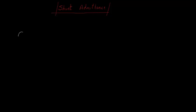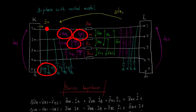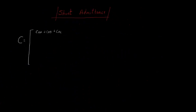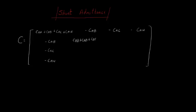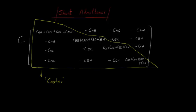For the shunt admittance matrix, we can build the matrix using the inspection method, where the elements on the main diagonal are the sum of the capacitances connected to the respective node. As an example, the first element of the matrix is the sum of CAA plus CAB plus CAC plus CAN. Keep in mind that OpenDSS divides the value of the capacitances by two due to the PI model in its internal algorithm. The elements off the main diagonal are the mutual capacitances between the respective nodes, with a negative sign. Like the R and X matrices, we can declare the lower triangle directly in OpenDSS. The capacitance units must be in nF per unit length.